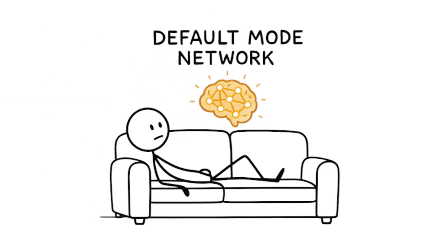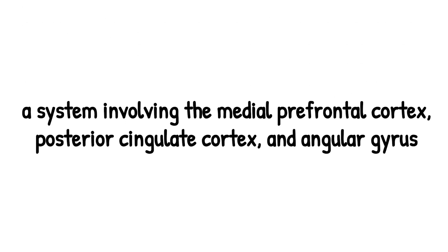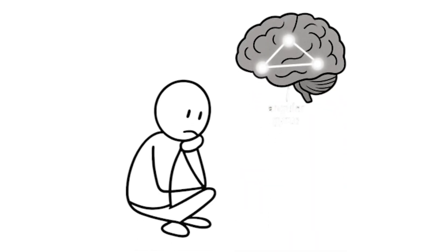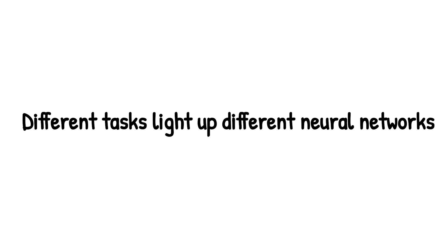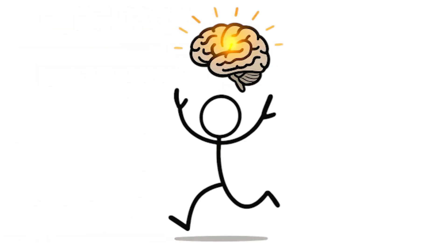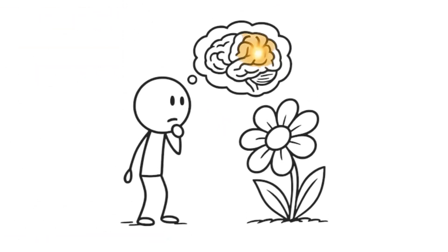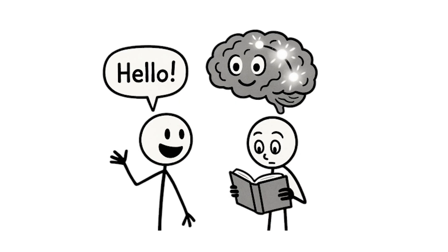When you're doing nothing, your brain activates what's called the default mode network, a system involving the medial prefrontal cortex, posterior cingulate cortex, and angular gyrus that's active during introspection and self-referential thinking. Different tasks light up different neural networks, the motor cortex when you move, the visual cortex when you see, the language networks when you speak or read.